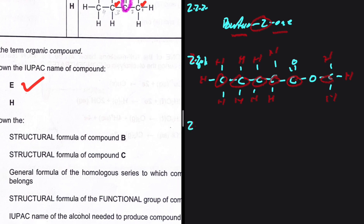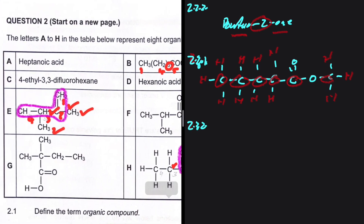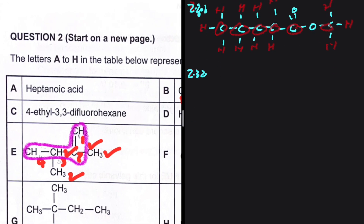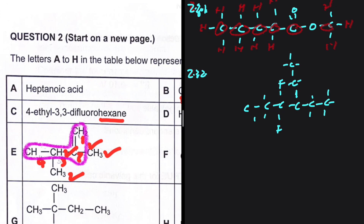For 2.3.2, the structural formula of compound C — 4-ethyl-3,3-difluorohexane. I start with hexane: one, two, three, four, five, six carbons. On the third carbon I place difluoro — two fluorines. On the fourth carbon I place the ethyl branch, which is a two-carbon branch. Fill out all required hydrogens to complete the structural formula.